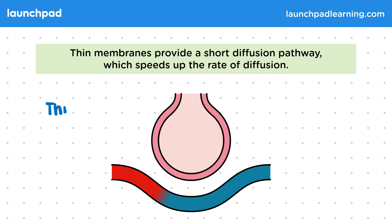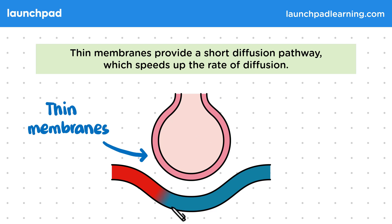Alveoli have thin membranes, which are just one cell thick. This means that the rate of diffusion of gases across the membrane is going to be fast, which is good for providing oxygen-rich blood that's low in carbon dioxide.